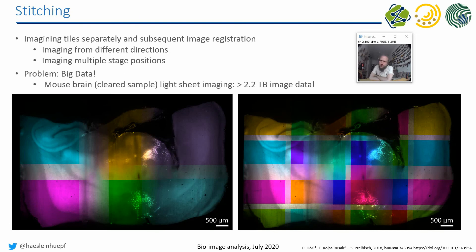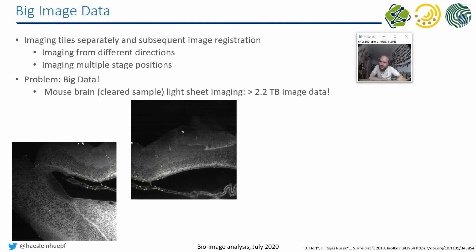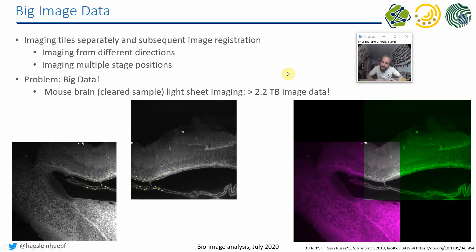A term you often find in microscopy is stitching. When the structure we are imaging is too big for our microscope's field of view to capture the whole sample, we have to take several images — tiles — and stitch these tiles together afterwards. This becomes a challenge when the image data becomes very large, potentially terabytes. For example, looking at a mouse brain, the challenge is to bring identified interest points together so that different sections fit into one dataset.